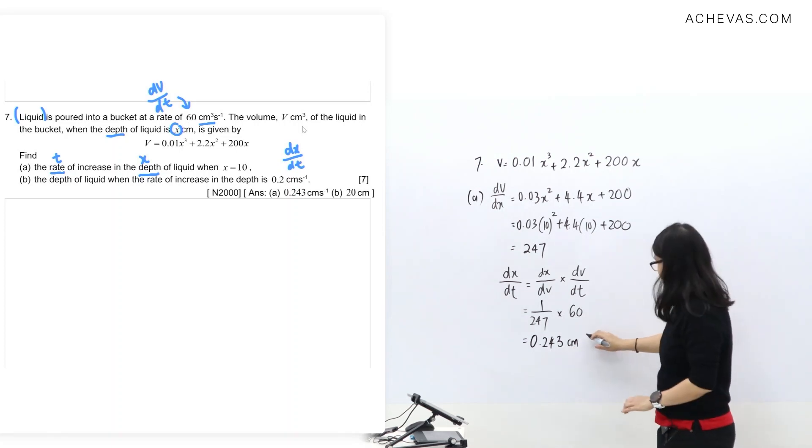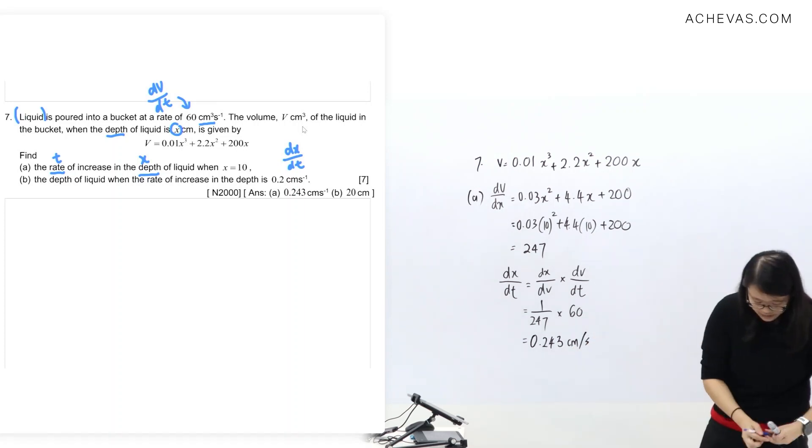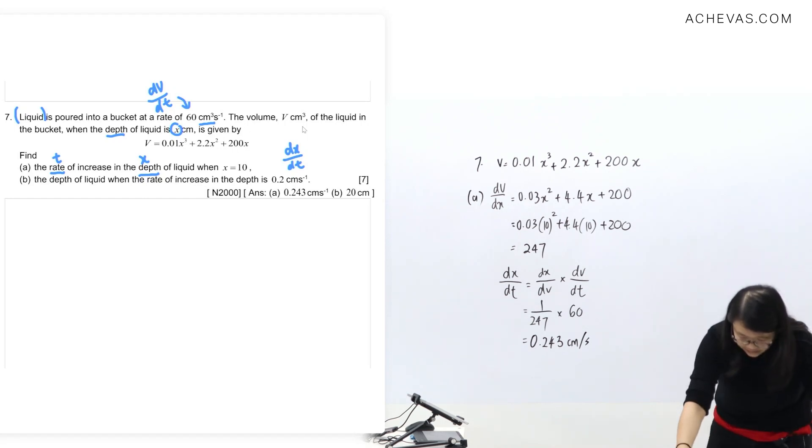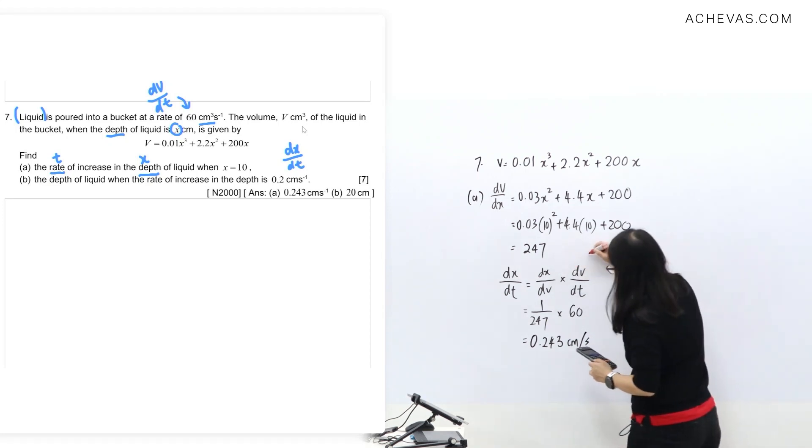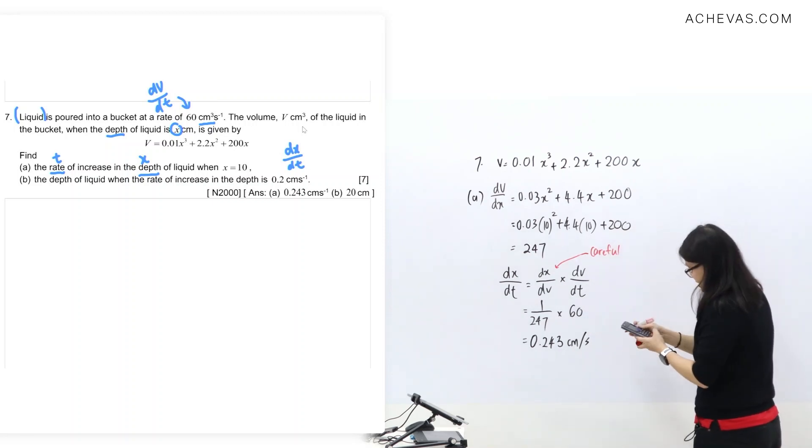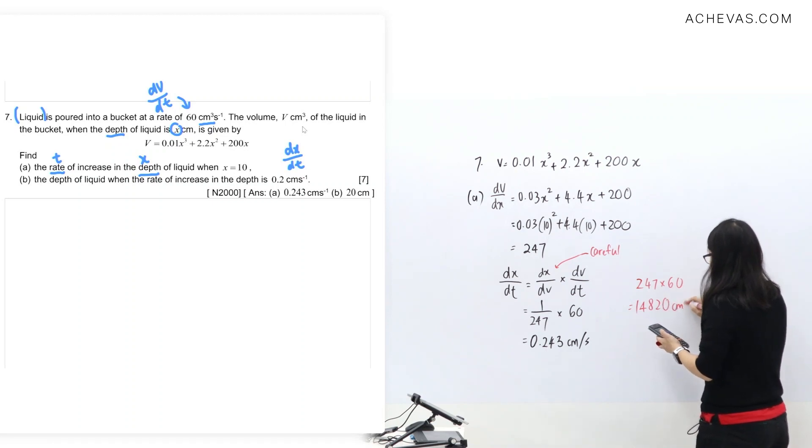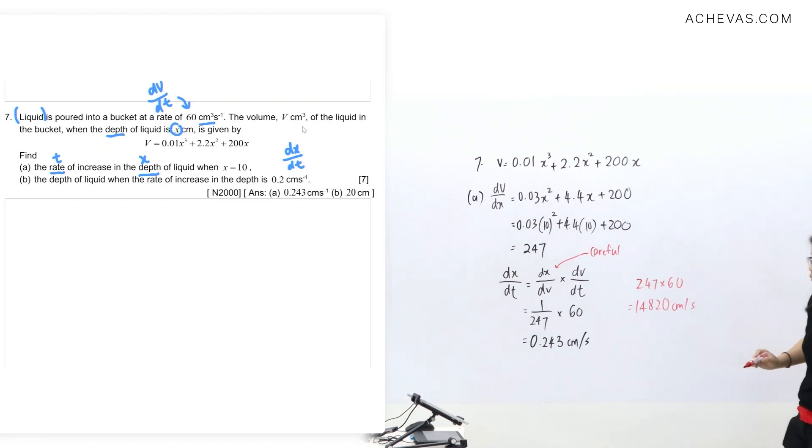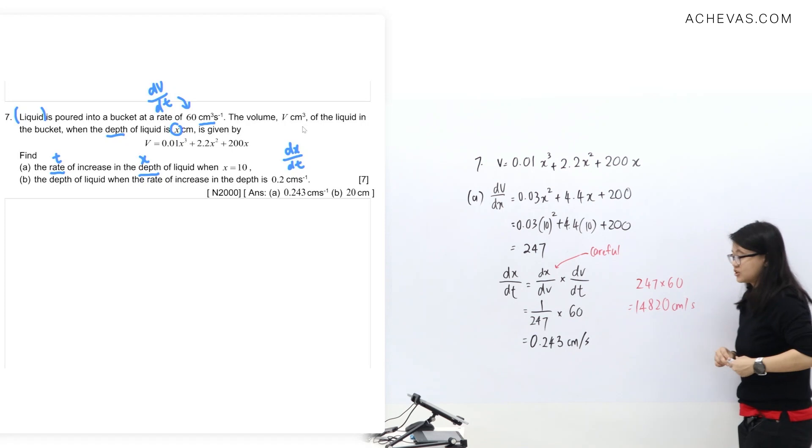This one is x, so it's just cm per second. Now let me just quickly show you with a red pen to indicate - what if you forgot the reciprocal here? I ask you to be careful over here, right? Be careful. So what if, let's say, you forgot and you typed 247 times 60? You get 14,820 cm per second.